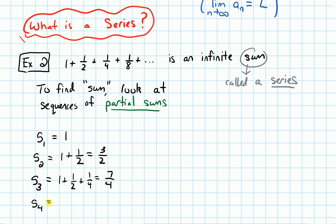And S4 would be the first four terms added up — that would be the first three terms plus one-eighth. So if you add seven-fourths to one-eighth, we end up getting 15 over eight. What we have now is a sequence: S1, S2, S3, S4. This is a sequence of partial sums. They're called partial sums because it's not the entire sum — it's just a part of it, that's why it's called partial.